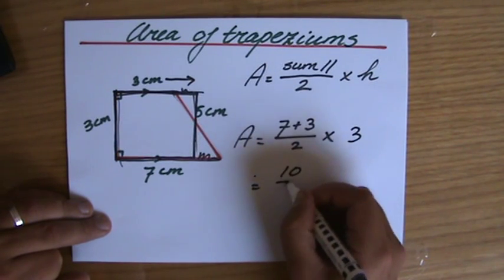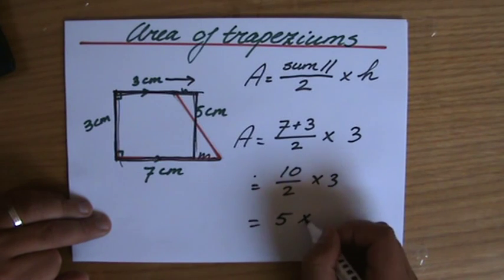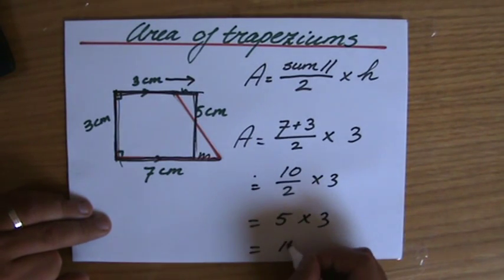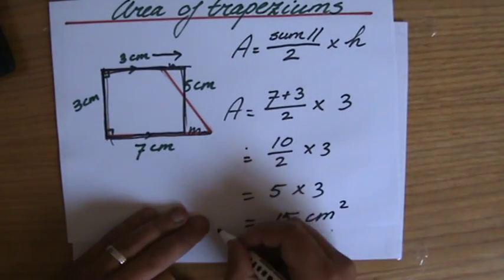Okay? Ten divided by two. Let's write it down. It doesn't take that long. Ten divided by two, indeed, is five. And five times three is fifteen centimeters squared. Very good. Yeah, don't forget the unit. Okay?